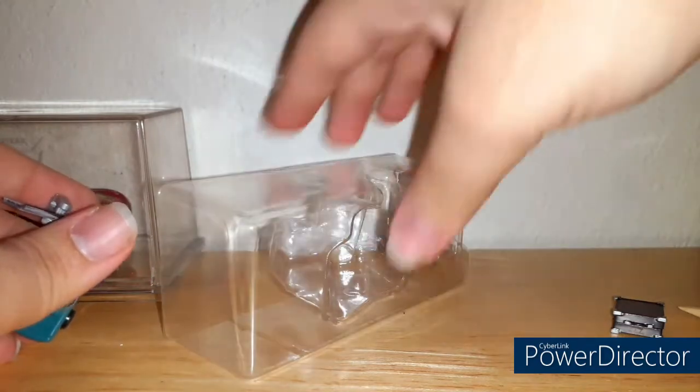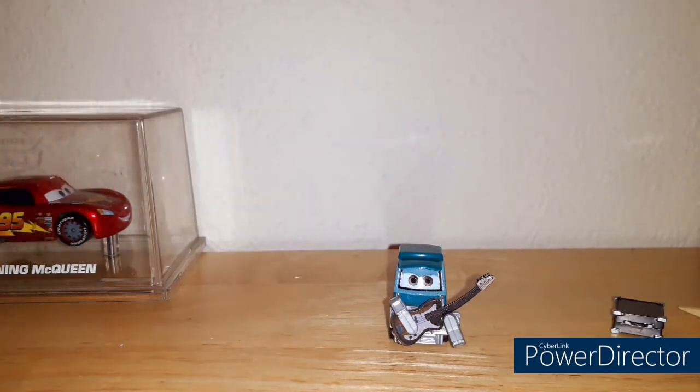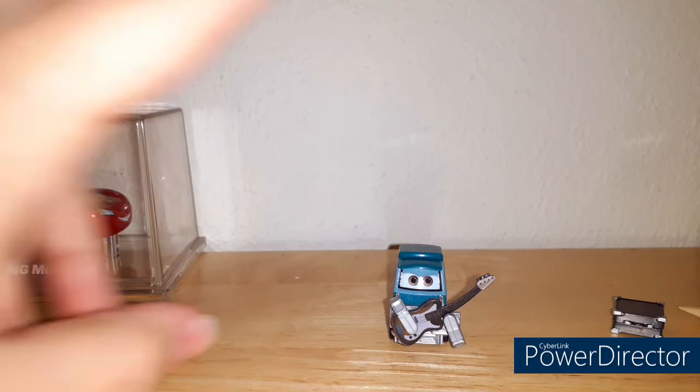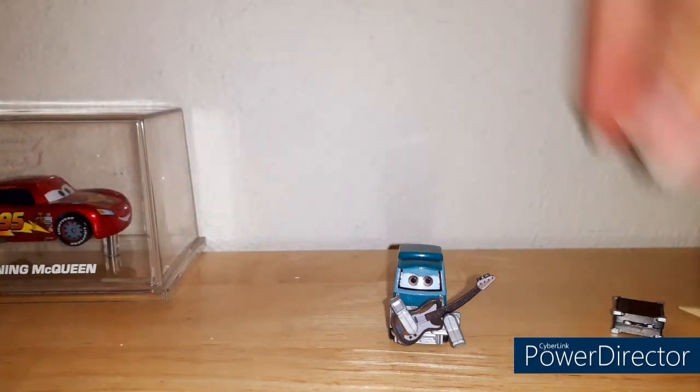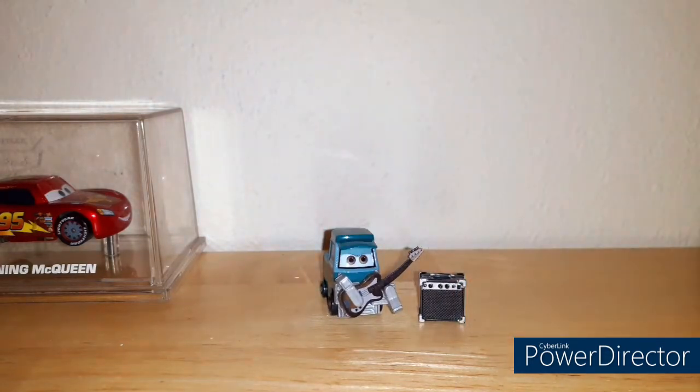I really don't understand why they can't just, what they should have done for this release and for all of the Sweet Tea's band members is release all of them in a two-pack. So basically, since they classify Luigi and Guido as one car even though they're actually two, what they should have done here is make a two-pack with Sweet Tea, Robert Jim Jones, Rich Hurry, and Pam Wieldero. Those are the four members of Sweet Tea's band, including Sweet Tea herself.